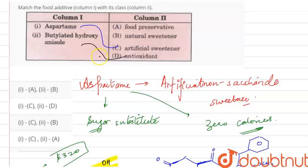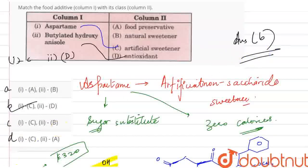So BHA is an antioxidant, which is given option number D. So here, first is C part, second is D part. So my answer is part B. My question is correct with part B. These are my four parts A, B, C, D. So correct answer is part B. Thank you.